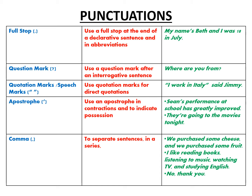The next one is a question mark. Whenever we ask a question — whenever there is an interrogative sentence — we end our question with a question mark. For example, 'Where are you from?' — then we put a question mark there. The next one is quotation marks. They are also referred to as speech marks, inverted commas, or talking marks. They are used to show where speech or a quotation begins and ends.